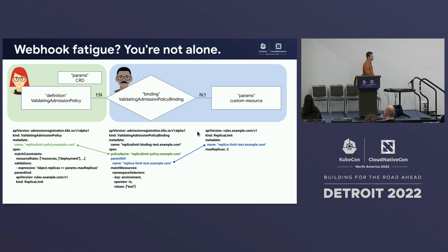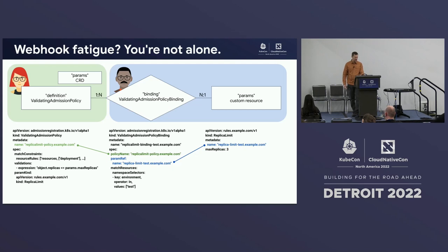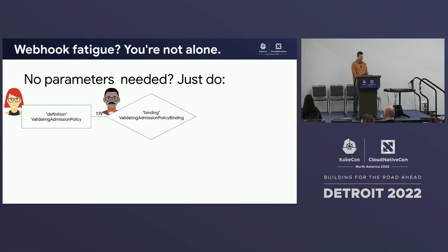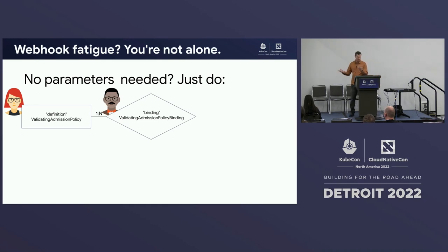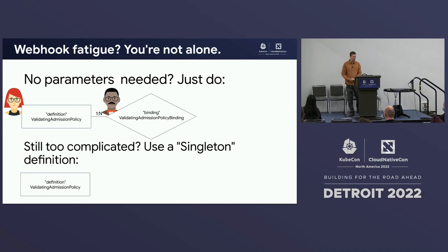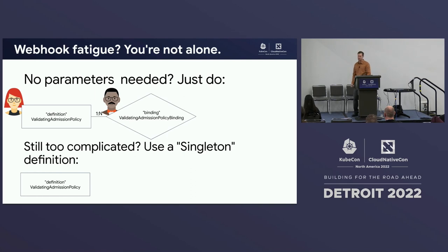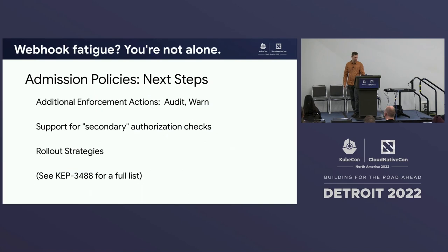You might notice this involves quite a few resources — in this example, four different Kubernetes resources. We can simplify that: if you don't need parameterization, we can go down to just two resources by having the cluster administrator create a single binding. We can take that even further in the most basic case — if you're writing a one-off policy, you can write the whole thing just in the validating admission policy by inlining your binding information, making it a single resource. We think that's useful for cases where somebody just needs to do something simple and isn't building a larger policy engine.